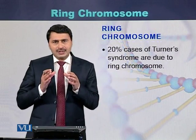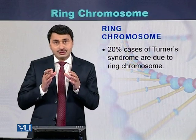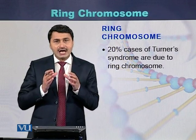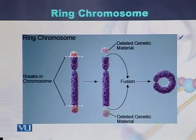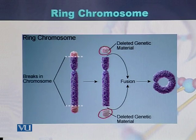Approximately 20% of cases of Turner syndrome are due to the formation of a ring chromosome. In this diagram, we can see how the ends of the chromosome are deleted and ultimately fuse with each other. These regions are called telomeres — Telomere 1 and Telomere 2 are deleted, and the two ends join to form a ring chromosome.